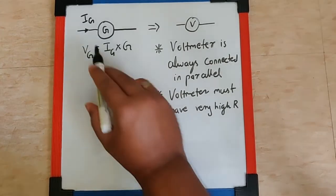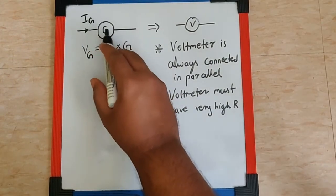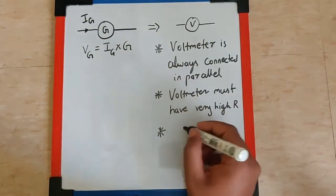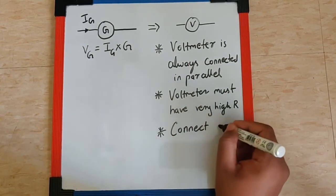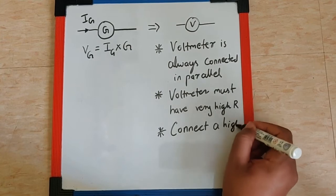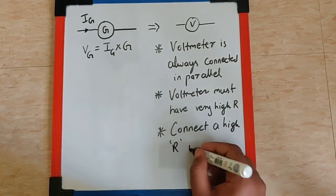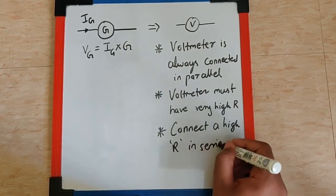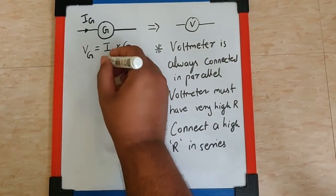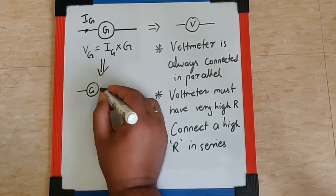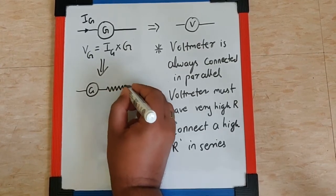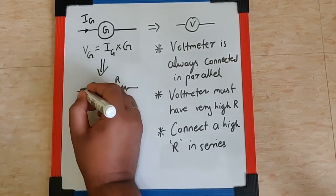Now to make the resistance of the galvanometer high such that it can act like a voltmeter, we need to connect a high resistance in series, which means we will have a galvanometer and a very high resistance connected in series.